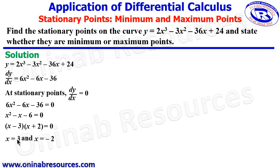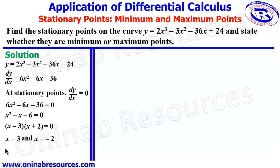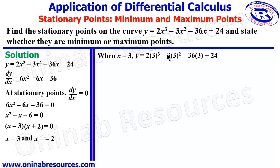We now have the x-coordinates of the stationary points, and we are going to find the y-coordinates. We pick the first value: when x is equal to 3, we substitute into the function. So y equal to 2 times 3 cubed minus 3 times 3 squared minus 36 times 3 plus 24, and that gives negative 57.